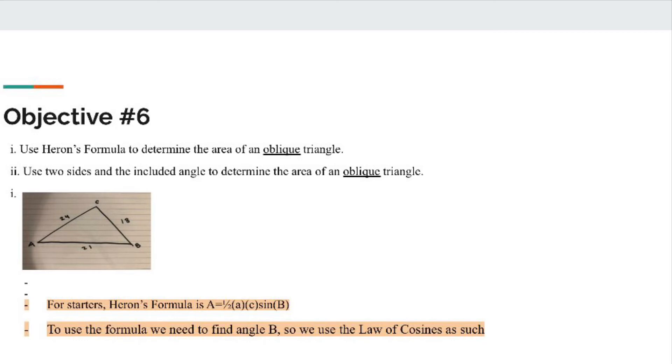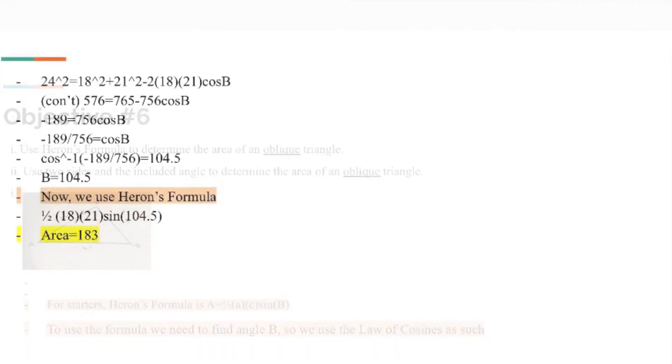The formula is area equals one half side a times side c times sine angle b. To use the formula, we need to find angle b using law of cosines. Side a equals 18, side b equals 24, and side c equals 21.